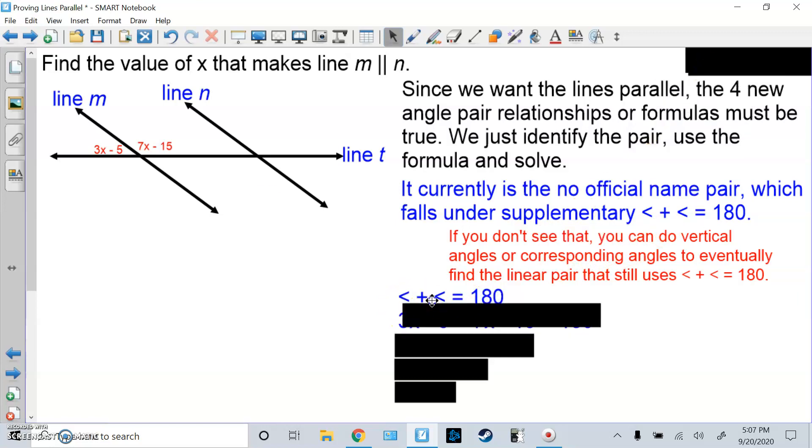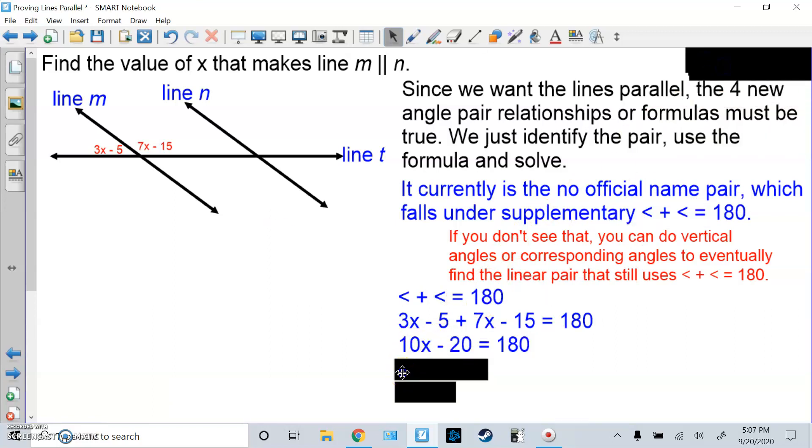So no matter what, you should get the formula angle plus angle equals 180. So we're going to fill in the formula: 3x minus 5 plus 7x minus 15 equals 180. Combine like terms, add 20 to both sides, divide by 10. X is 20.